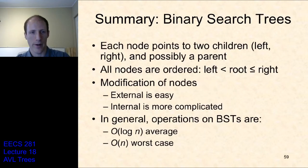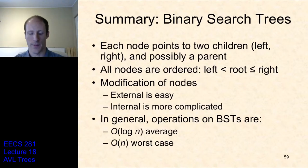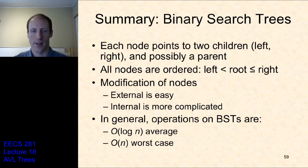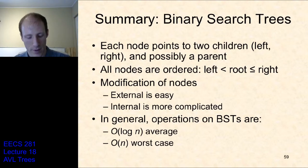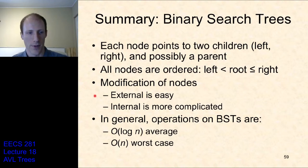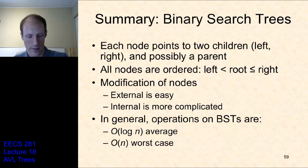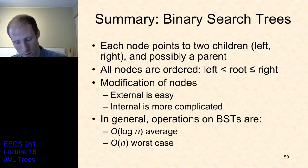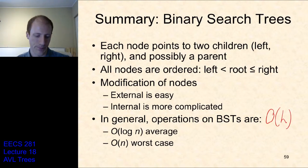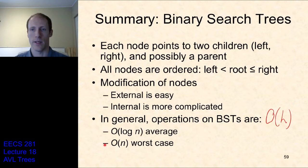So that's the last algorithm for binary search trees. To sum up: each node points to two children and possibly a parent, all nodes are ordered, and we've seen how to insert and remove nodes. In general, operations on a BST are O(H), where H is the height of the tree, which on average is O(log n), but in the worst case can be O(n).